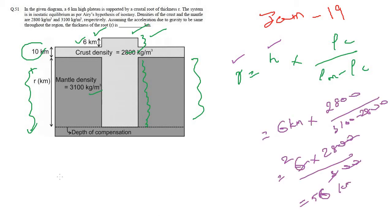If you place the values — height is 6 kilometers, density of crust and density of mantle — and put in the values, we get the answer as 56 kilometers. Take care of the units: we have to find in kilometers, and the density of crust and mantle should also be consistent in units.